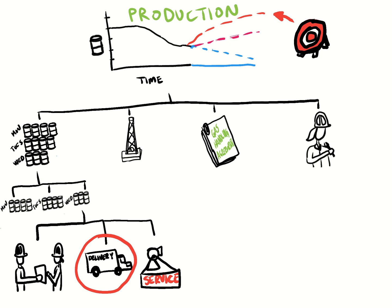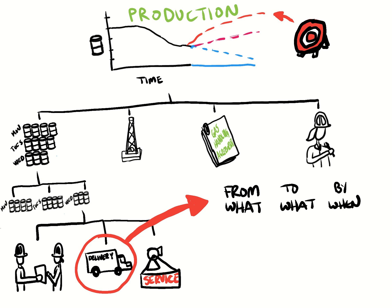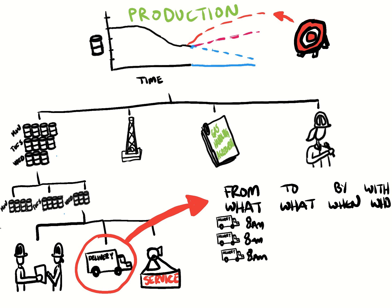To drive that improvement, we need to create a new metric for this sub-element of the bigger production metric. To build our new deliveries metric, we need to define: from what — so where are we now; to what — where do we want to go; by when; and with who — to make sure we're clear on the expectation of the pace and of this change.